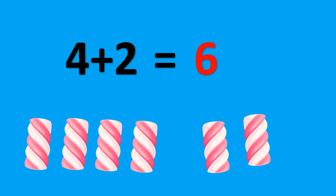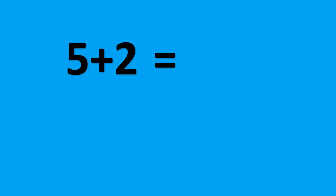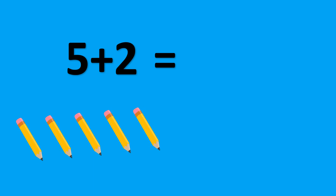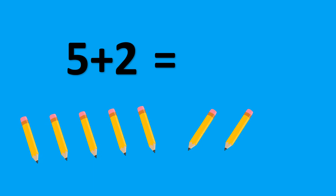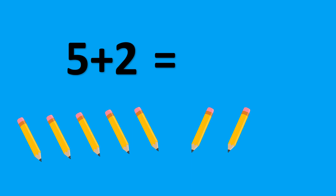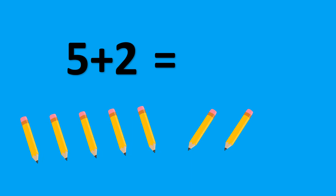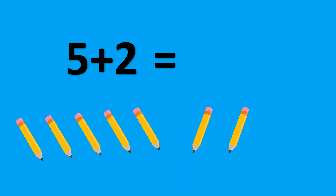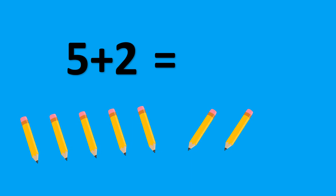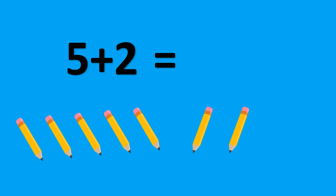5 plus 2. There are 5 pencils. Let's add 2 pencils. Now we have 5 pencils plus 2 pencils. This equals 7 pencils. So, 5 plus 2 is 7.